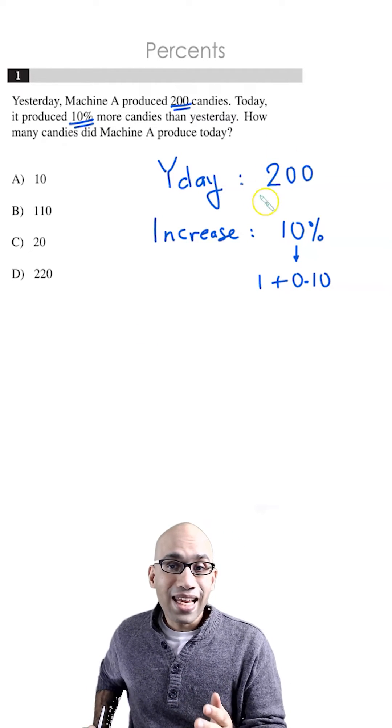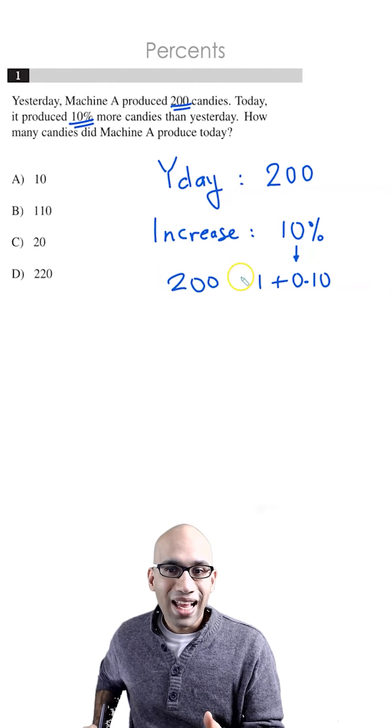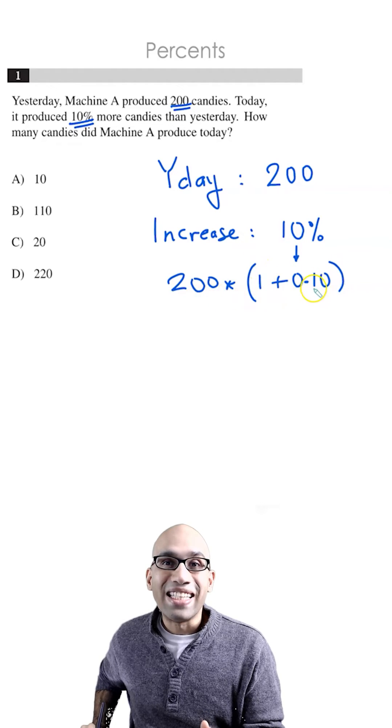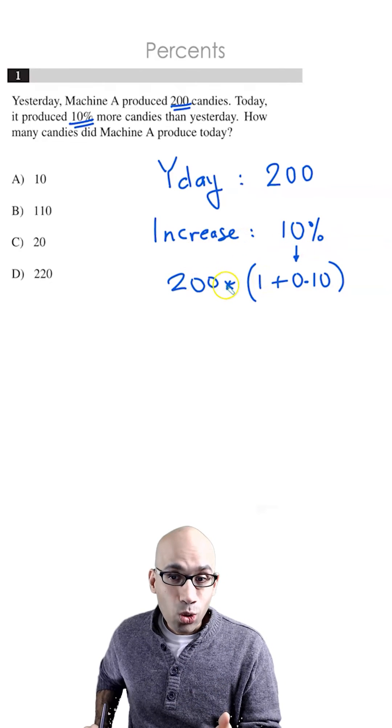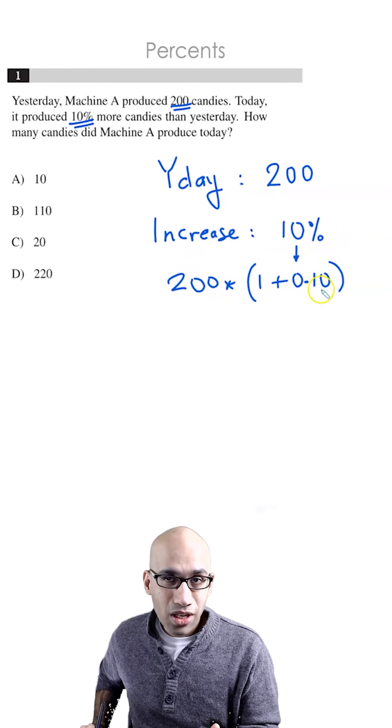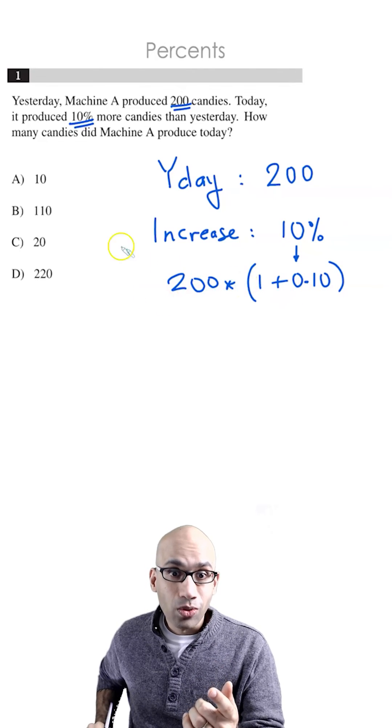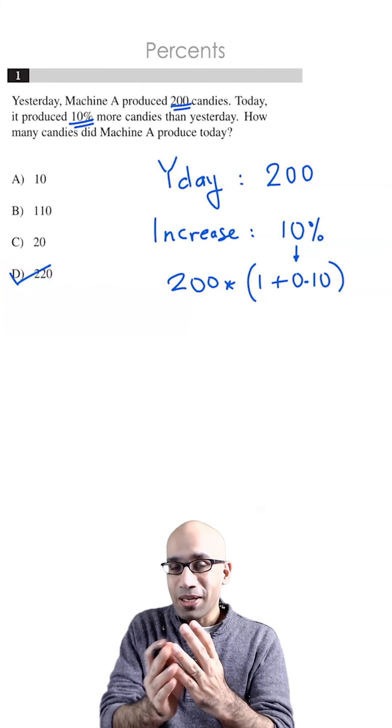Then take this number 200 and write it right over here. And all you've got to do now is multiply these two numbers to get the answer. As simple as that. So you've got 200 times this number, which is 1.10, and multiplying these two gives you the answer of 220. As simple as that.